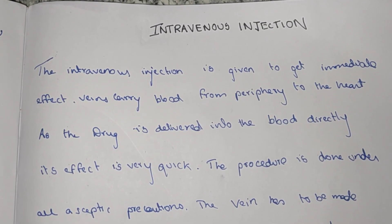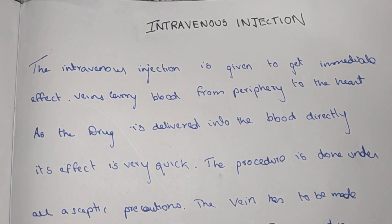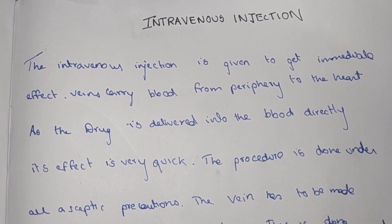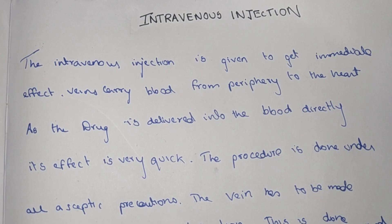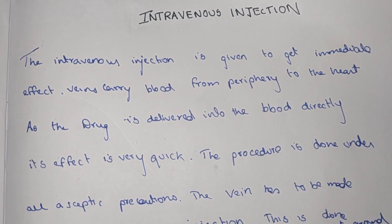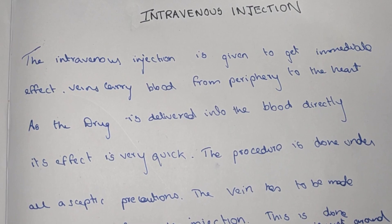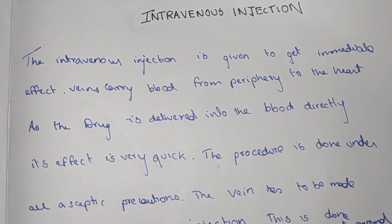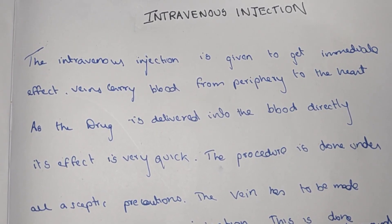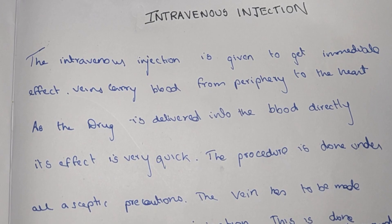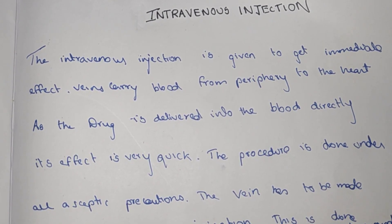Welcome to the YouTube channel. Today we are going to see about the intravenous injection. Intravenous injection is given to get the immediate effect. Veins carry blood from the periphery to the heart, while arteries carry blood from the heart to the peripheries.